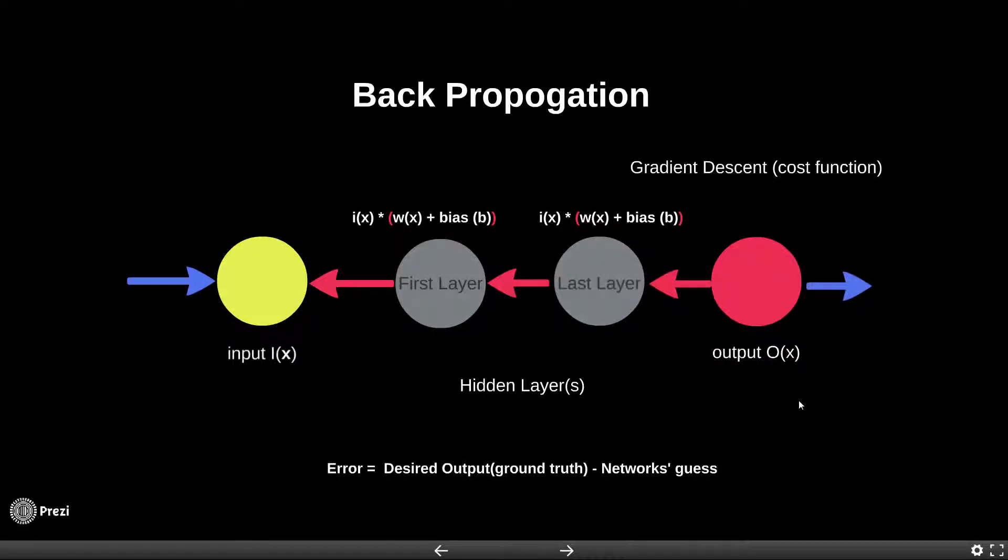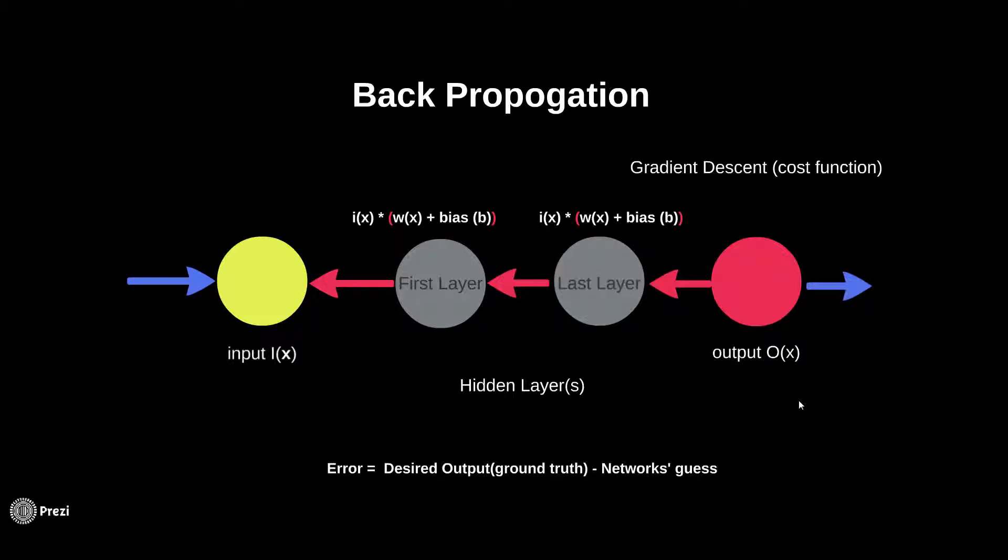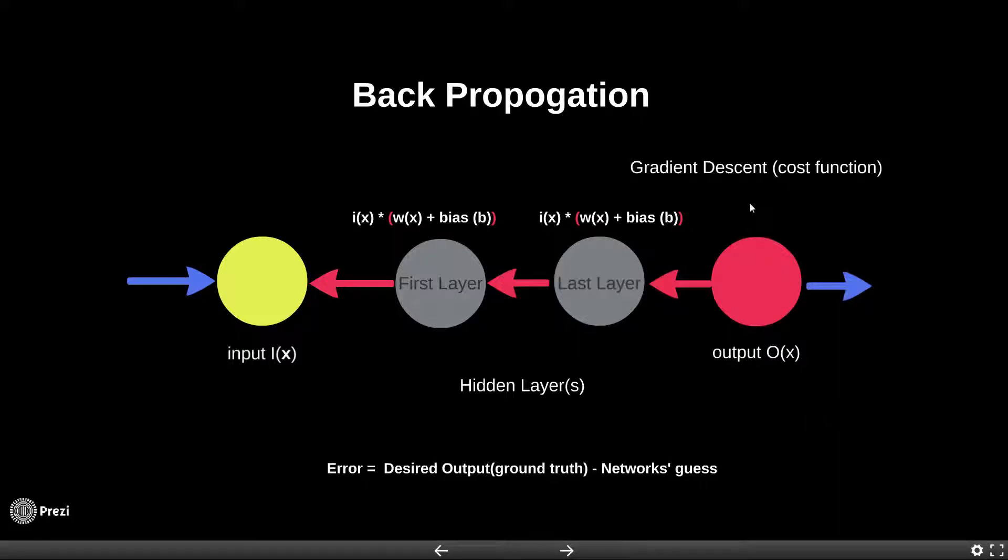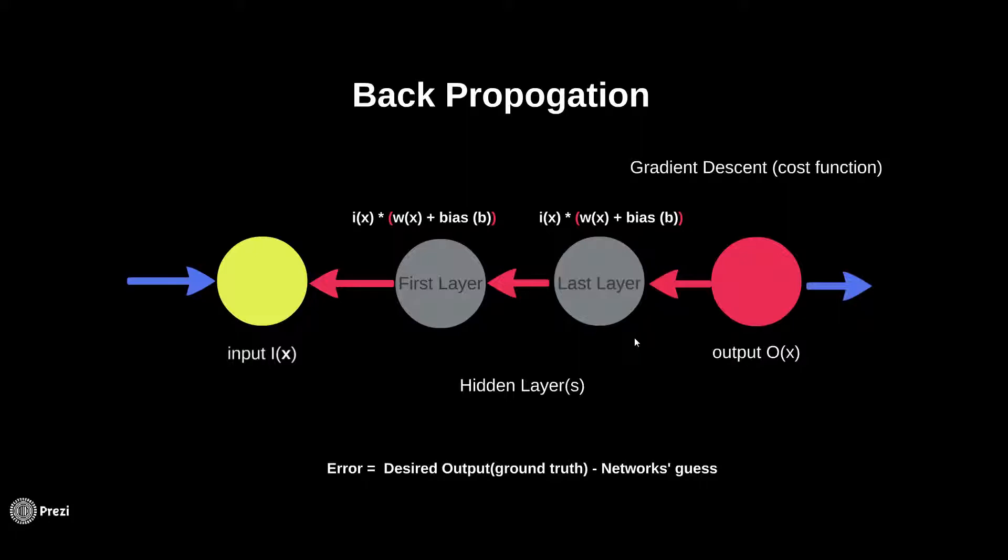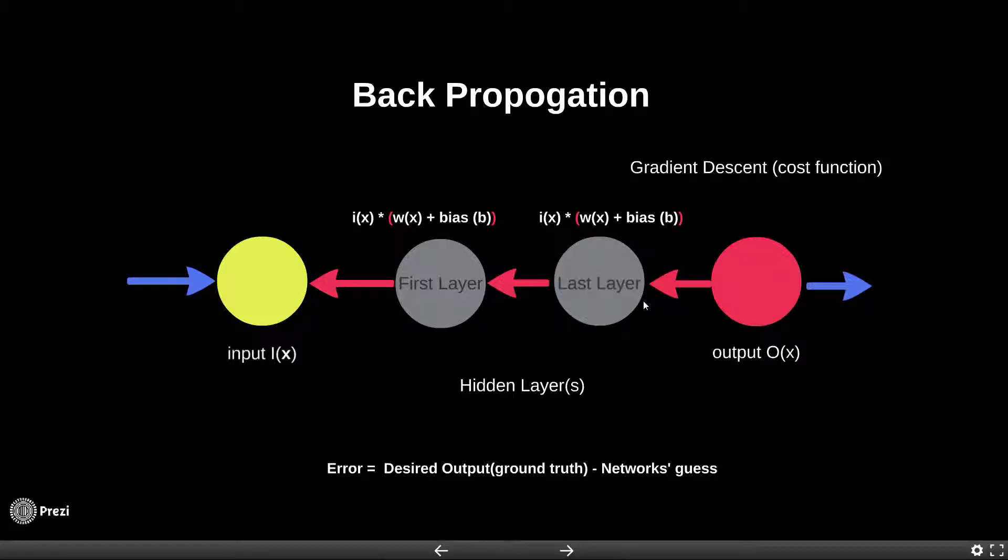As of now, the network has gone through many epochs and the gradient descent has a good understanding of the cost function. Now it needs to communicate to the network how to adjust the weights and biases in a way that the error can be reduced. Keep in mind that there are different hidden layers.